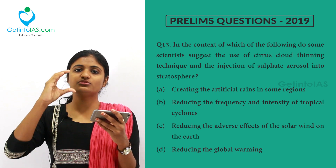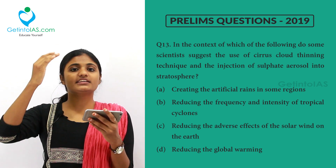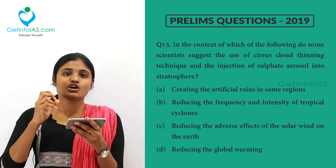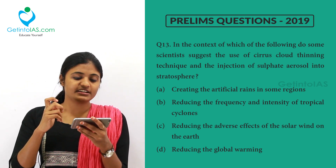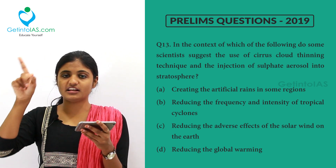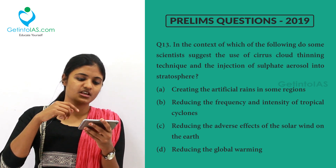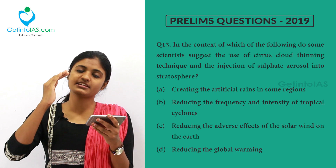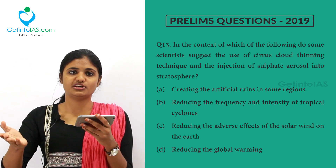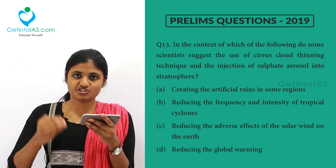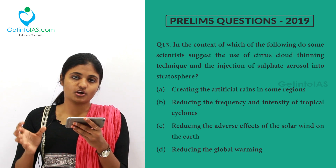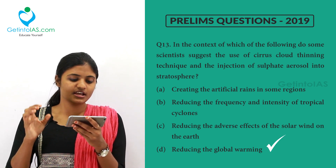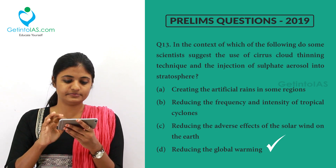When you thin the cirrus layer, it reflects back most of the UV radiation. When you spray sulphate aerosols on the stratospheric region, they also have the capacity to reflect UV radiation. These are the two suggestions scientists have given us. Accordingly, the answer for this question is option D — reduction of global warming.